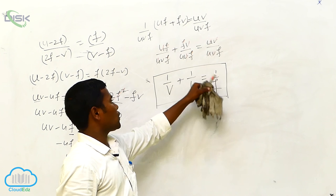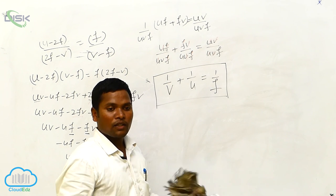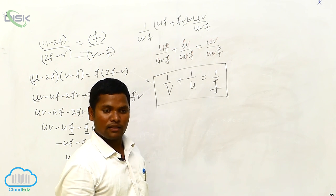Finally we got the mirror formula: 1/f is equal to 1/v plus 1/u. This is the mirror formula. Later we have to apply the sign rules. There are some sign rules — we will apply in the next class.